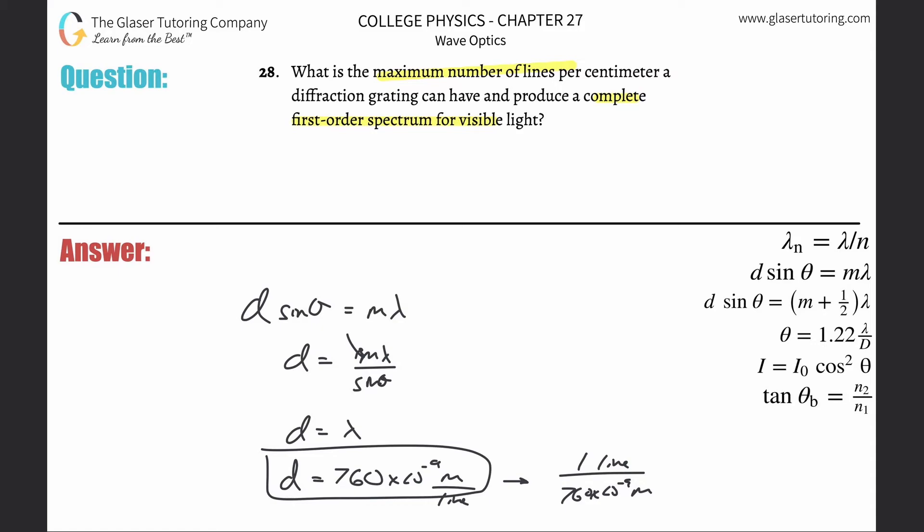So when we do 1 divided by 760 times 10 to the minus 9th, we get about 1.32 times 10 to the 6th. But that's, remember, lines per meter.